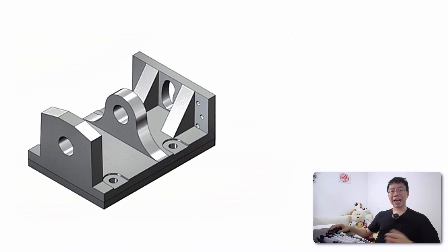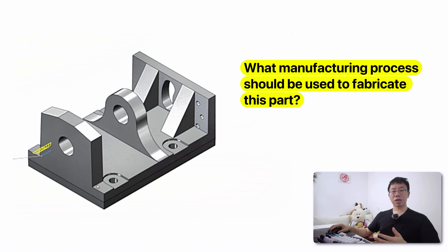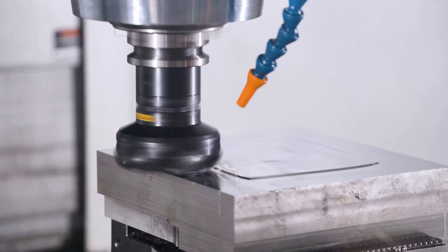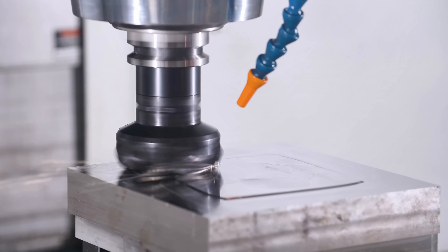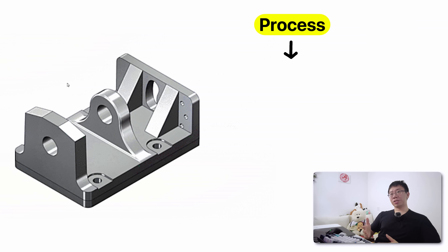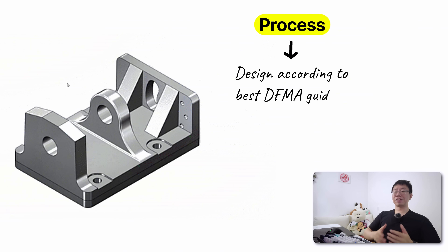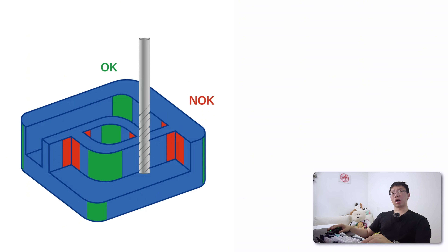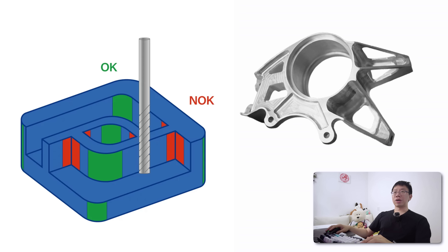For every part you design, ask yourself what manufacturing process are you going to use to fabricate it? Perhaps it's 3D printing or CNC machining for the proof of concept, and then lost foam casting for the final mass-produced product. Once you know the process, you can design according to the best DFM guidelines for that process. A simple example is designing a part with sharp internal corners that are impossible to machine with standard end mills, or creating complex contours that require multi-axis CNC setups and additional fixtures when a simpler design would work.